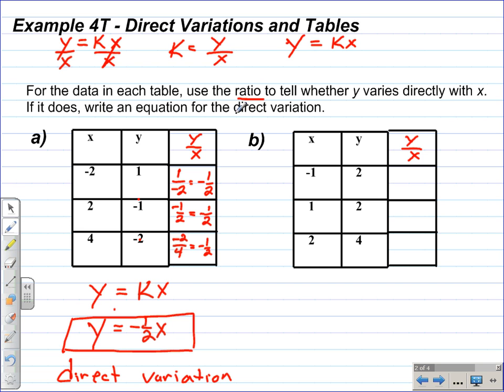This one doesn't really look like it blended in with the fraction bar there. If we look at example B, using the ratio to determine if this is a direct variation, y over x is the ratio we use. Here we have 2 over negative 1, which gives negative 2. In this pair, we get 2 over 1, which simplifies to 2. Right here, we could stop because these two ratios are not the same, so this is not a direct variation.